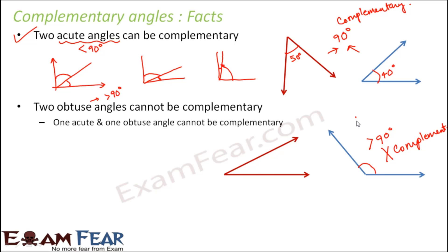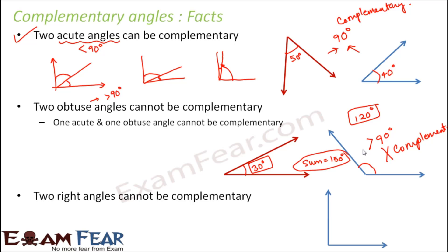Let me take an example. Let's say the value of one angle is 120 degrees, which is an obtuse angle, and the value of the other is 30 degrees, which is an acute angle. When you find the sum, it is 120 plus 30, which is 150 degrees — not 90. So obtuse angle cannot be complementary. Two right angles cannot be complementary either, because one right angle is exactly equal to 90 degrees. In order for this right angle to be the complement of some other angle, the other angle would have to be 0 degrees, which is actually nothing. Therefore, two right angles cannot be complementary.